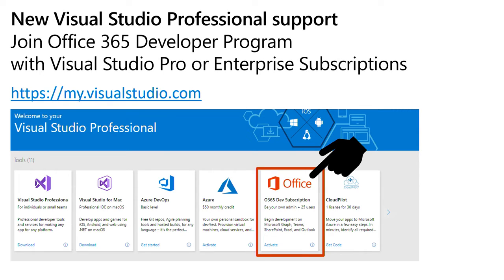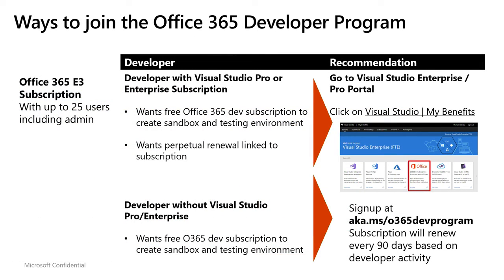We're trying to make it easier for people to actually get to the dev program, particularly for those of you that have Visual Studio Pro and Visual Studio Enterprise subscriptions. We're announcing today at Build that for Visual Studio Professional members, you're going to be able to get access to the Office 365 Developer Program right from your Visual Studio portal. You can go to myvisualstudio.com if you already have a subscription, and click on that tile to begin the process. We actually federate your Visual Studio ID, and then your subscription doesn't last just 90 days — it lasts as long as your subscription to Visual Studio lasts. If you don't have Visual Studio Pro or Enterprise, no problem — we do offer a free option at aka.ms/0365DevProgram.